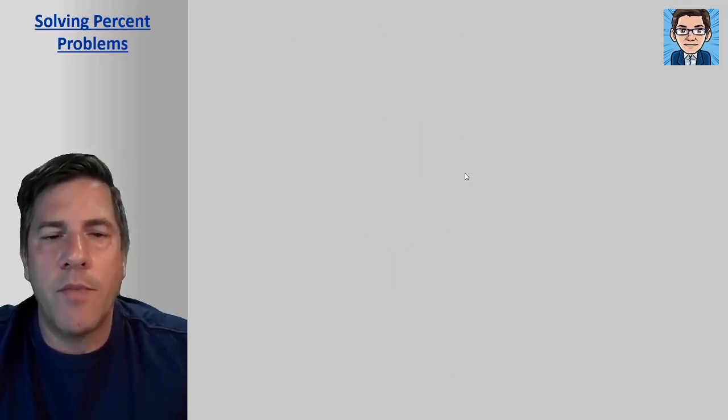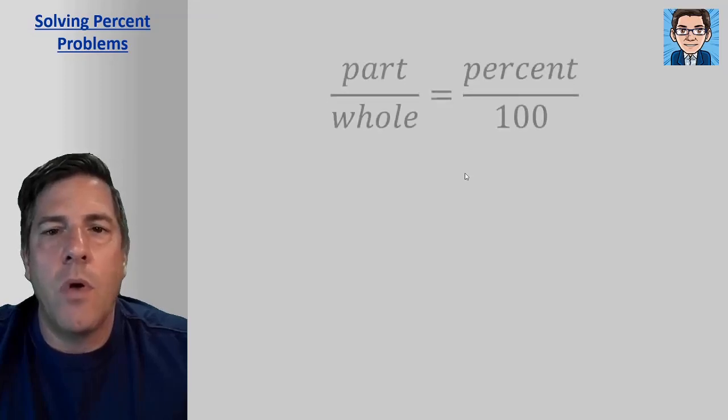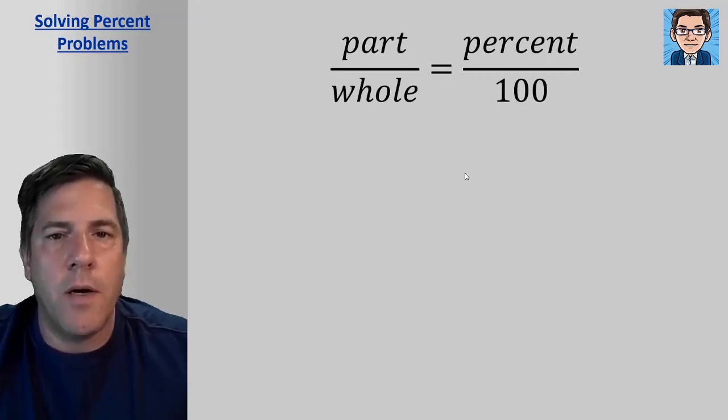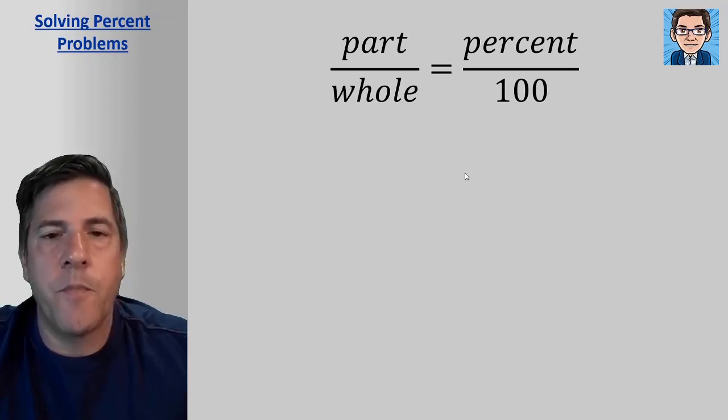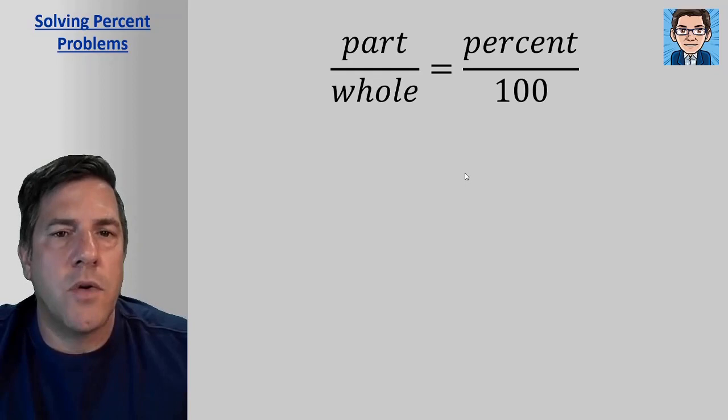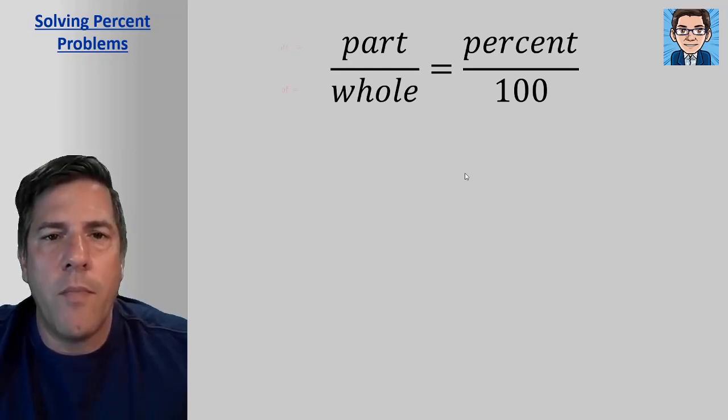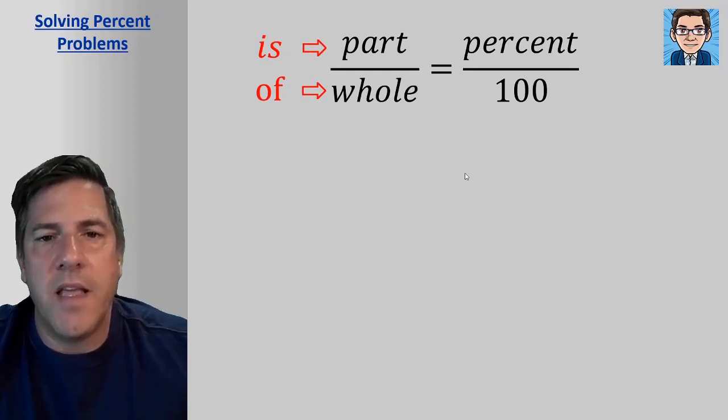So in all problems that we have in doing percentages, they can all be solved with this one equation. So the part over the whole equals the percent over 100. Now in some places you might have heard it, the is over of. Some teachers in some texts describe it as is over of. That's just because in a word problem, when you're talking about the part, it says is. And when you're talking about the whole, it says of. Let me show you what I'm talking about.